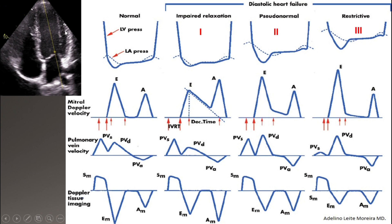With progressing diastolic dysfunction, not only is relaxation impaired, but expansion of the left ventricle also becomes a problem — the left ventricle becomes stiffer. Little by little, blood is retained in the left atrium, and pressure increases to push blood into the left ventricle. With this increasing left atrial pressure, E starts going higher again because when diastole starts, blood flows faster. E increases, becomes shorter, and deceleration time decreases. When established, IVRT and deceleration time return toward the normal range and E becomes taller.